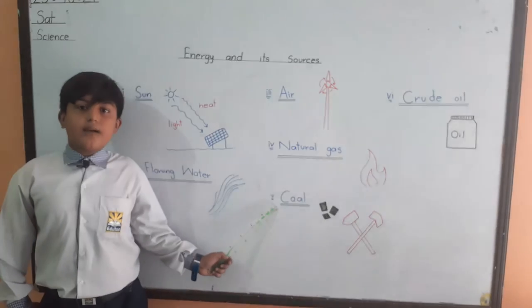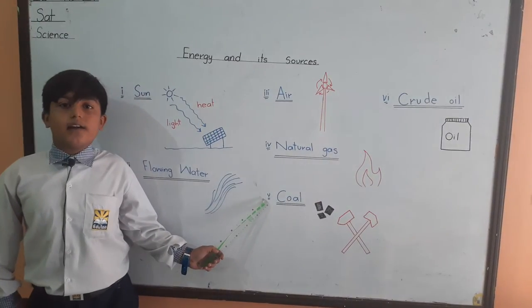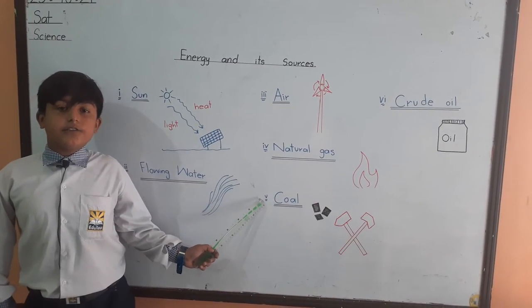Number 5, coal. Coal is a black coal. It contains large amount of carbon. It is used in factories.